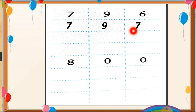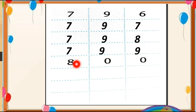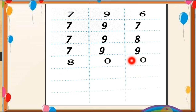After 97, the number 98 will come, so we write 798. After 98, the number 99 will come, so we write 799. After 799, which number will come? Here is 800. Because after 99, the number 100 will come. In 100 there are two zeros, and we add 1 to the 7, so 7 plus 1 equals 8. We write 8 here.